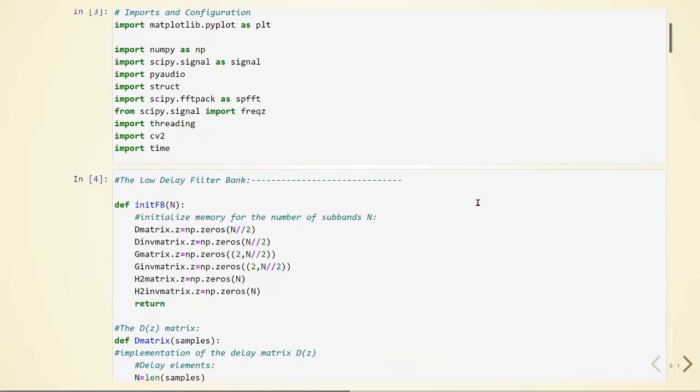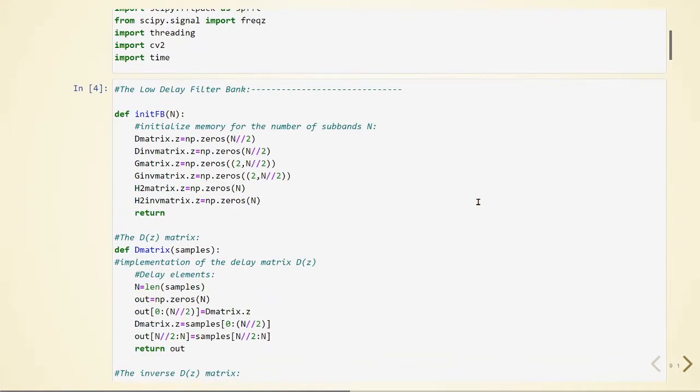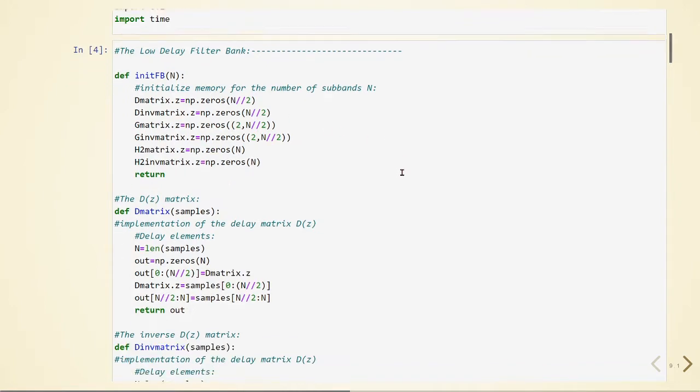Here we are initializing the memory for the number of sub-bands equals to n for all the matrices we are going to use. We are going to use the delay matrix and the inverse of the delay matrix. We have our G matrix and the inverse of the G matrix and we have our H matrix and the inverse of the H matrix.